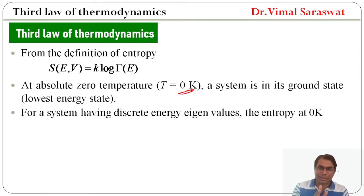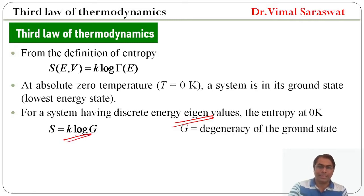For a system having discrete energy eigenvalues, the entropy at zero Kelvin is S equal to k log G. So if a system has discrete energy eigenvalues, then its entropy at zero Kelvin is given by S equals k log G, where G is the degeneracy of the ground state.